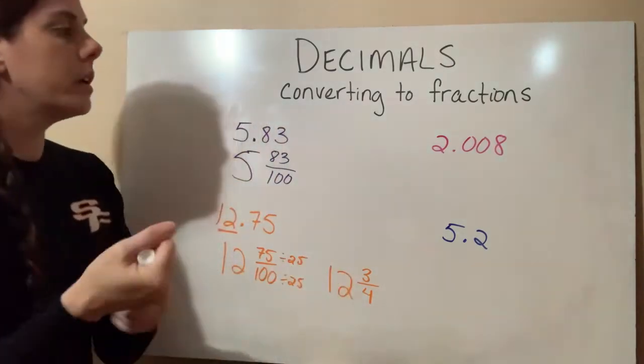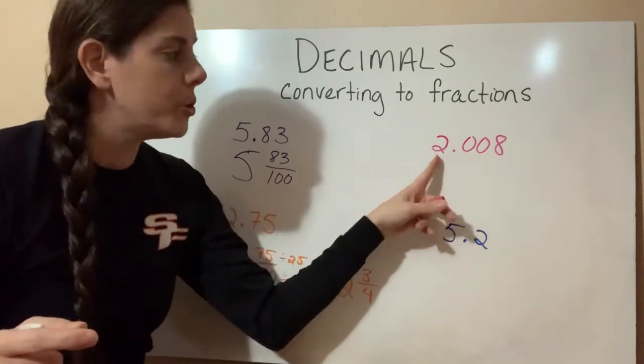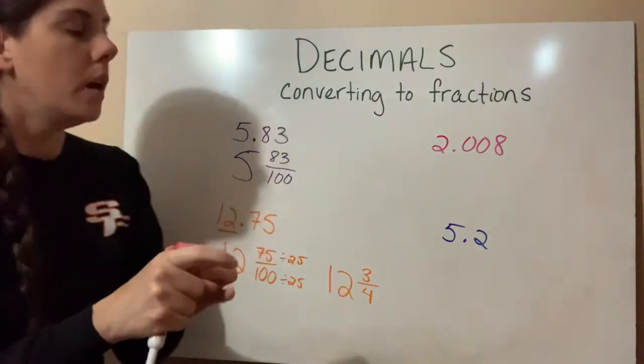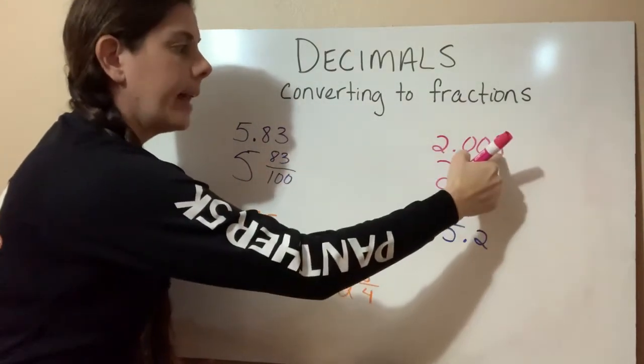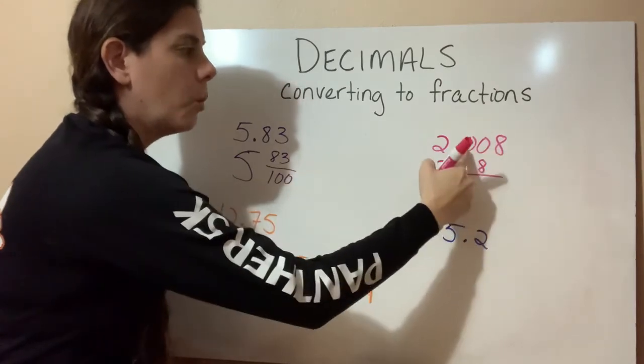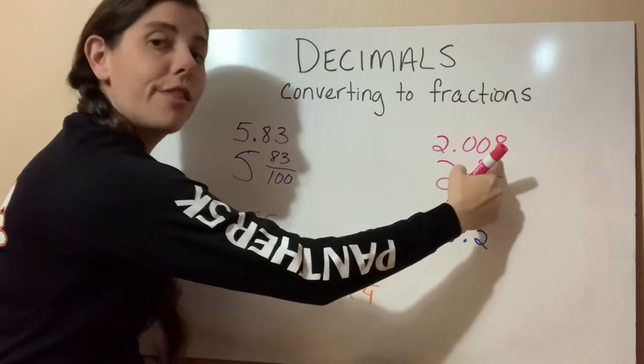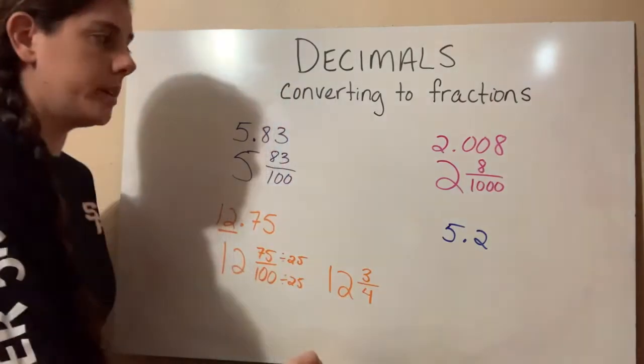Our next one is 2.008 or 2 and 8 thousandths. Okay, so 2 is our whole number and 8 is going to be our numerator. And what's the place value that we go over to? Tenths, hundredths, thousandths. So that means 1,000 is going to be on the bottom.